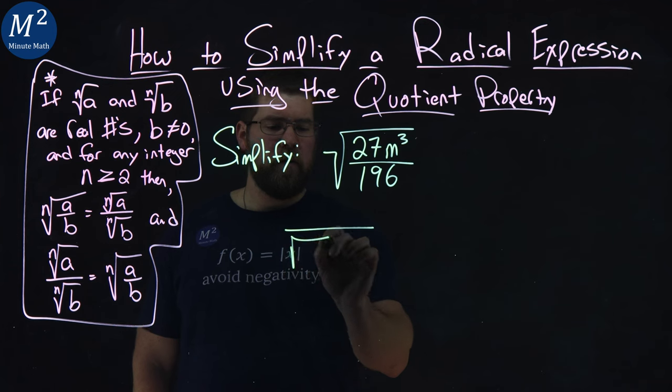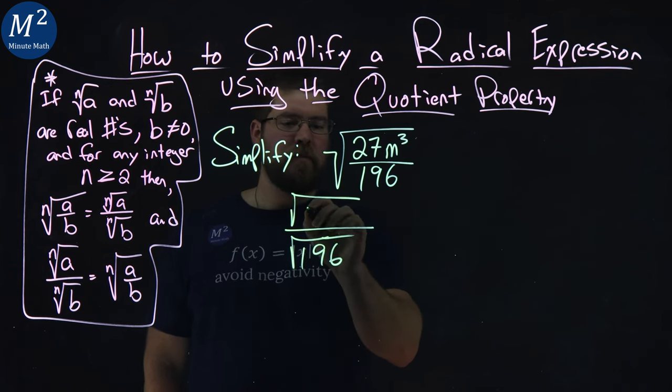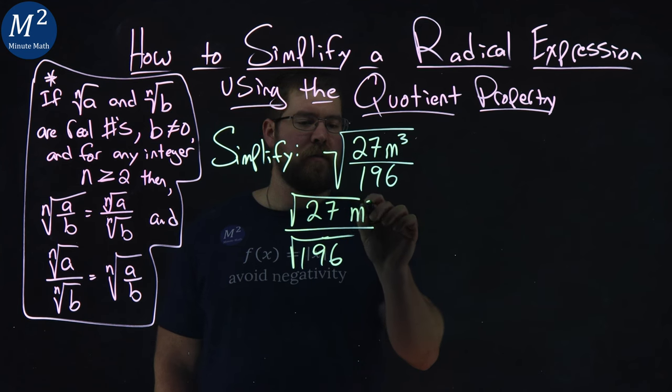So let's do that. We have the square root of 196 in the denominator and the square root of 27m to the third power.